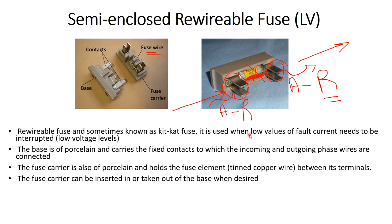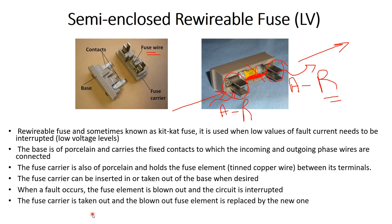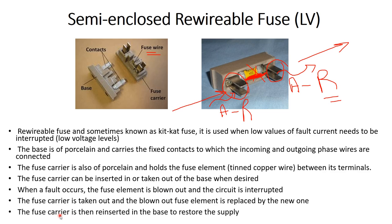When a fault current occurs, the wire melts. We can take out the fuse carrier — not the base — and replace it with another fuse carrier that has a new fuse wire. When a fault occurs, the fuse element blows out and the circuit is interrupted. The fuse carrier is removed, the blown fuse element is replaced, and the carrier is reinserted into the base to restore supply.